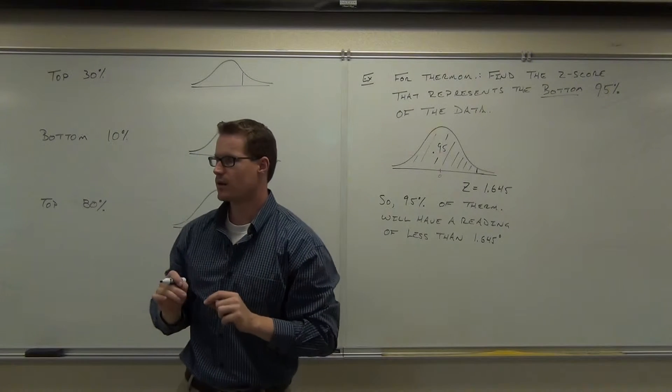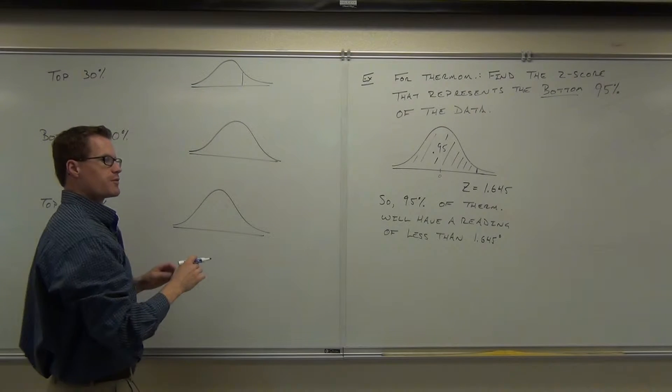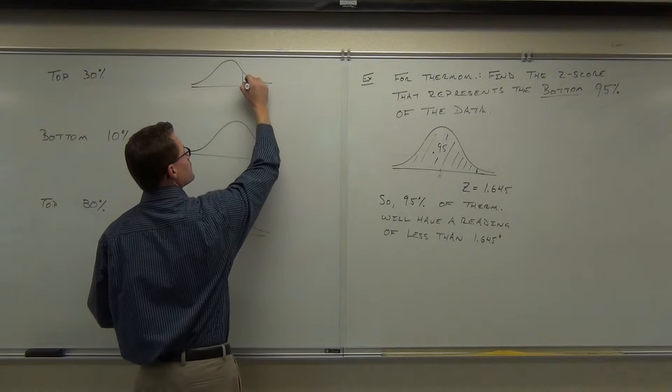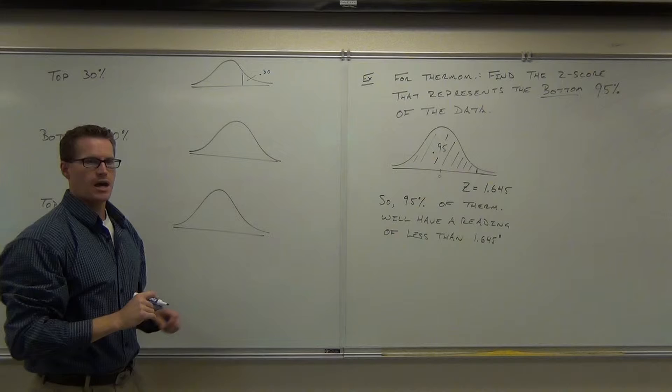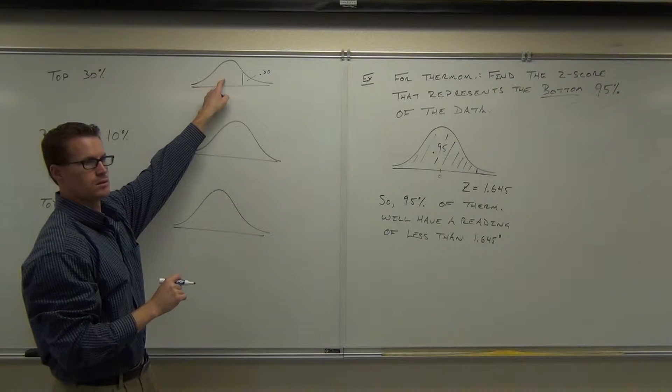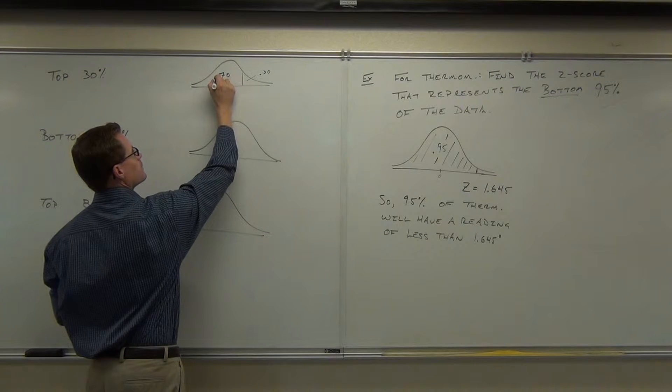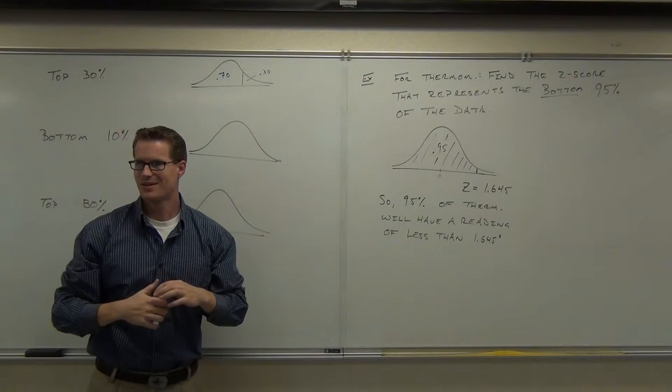You don't have to be exact, but you do have to draw the picture at least somewhat representative. So this is the top 30%. Does that make sense, it's top 30%? This would be like 0.30. How much would this be? 0.7. You all right so far? Yes.